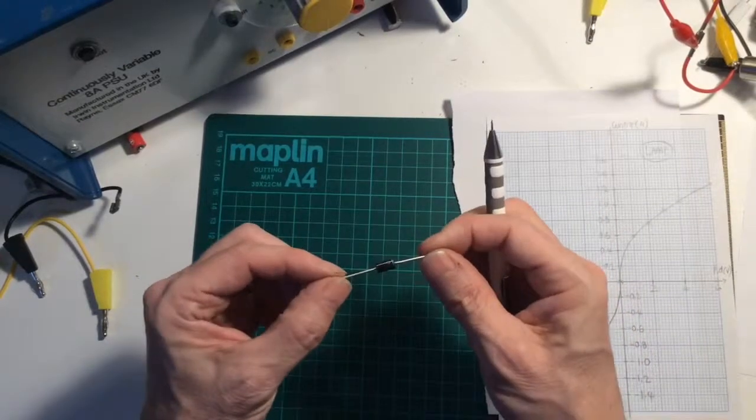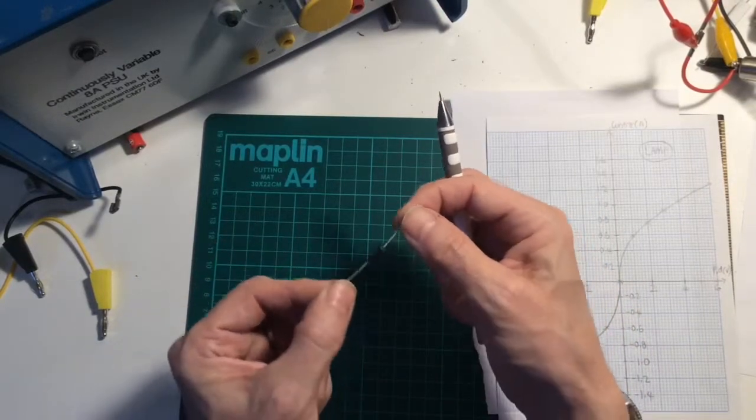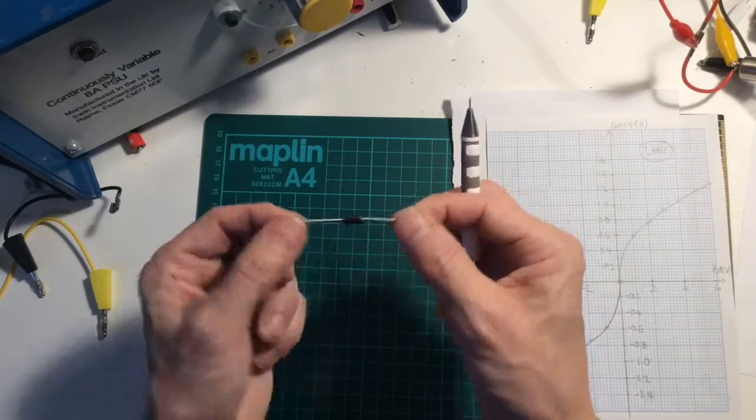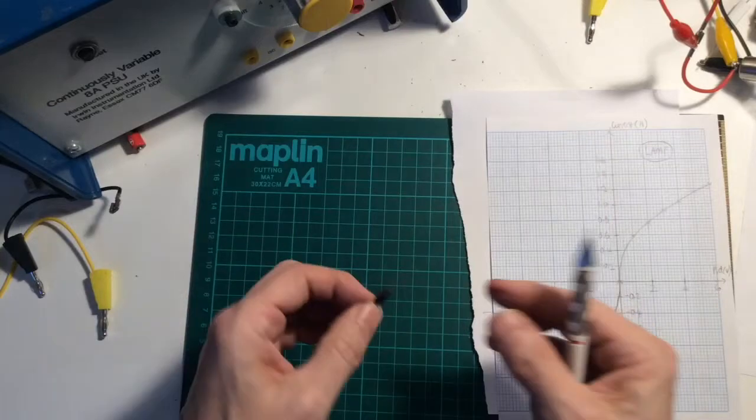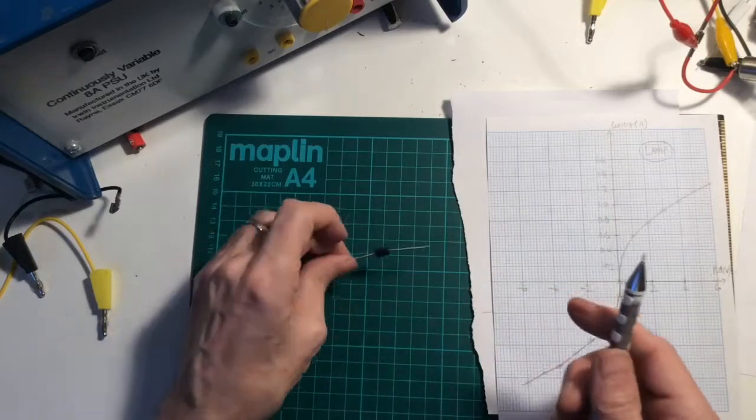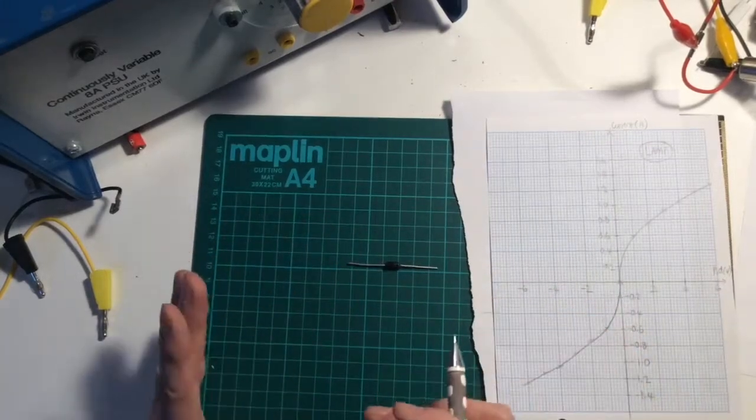So we have one more component to do, and it is this, which is a diode. It doesn't look like much, it's just a piece of plastic with wires coming out the end. Often don't do it in class because people think that the experiment is going wrong, but we'll see what happens when we do it.